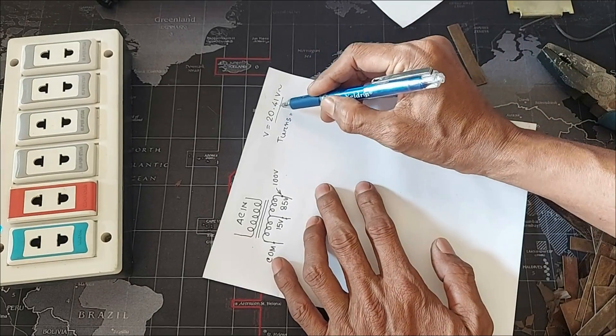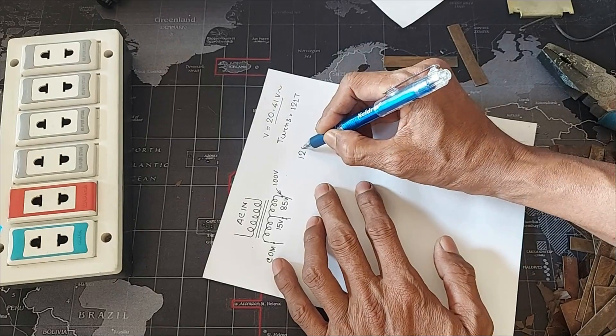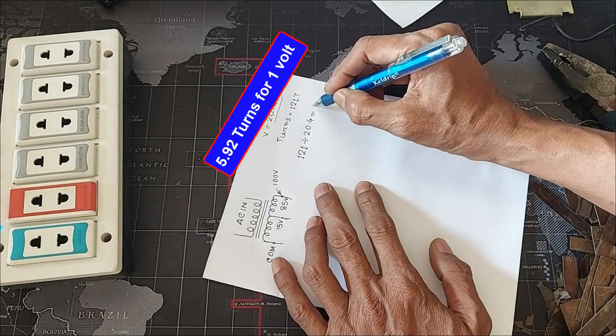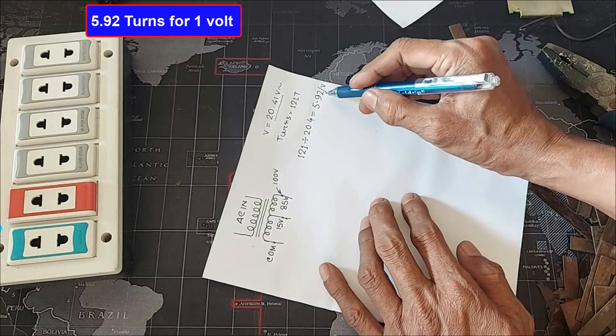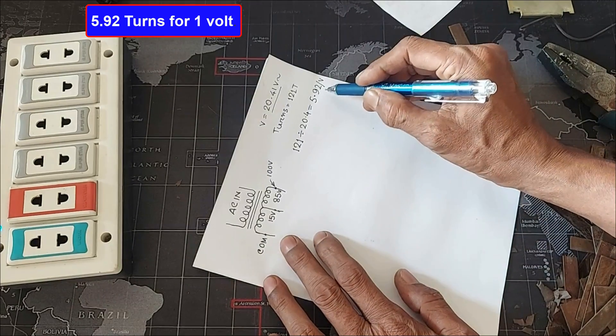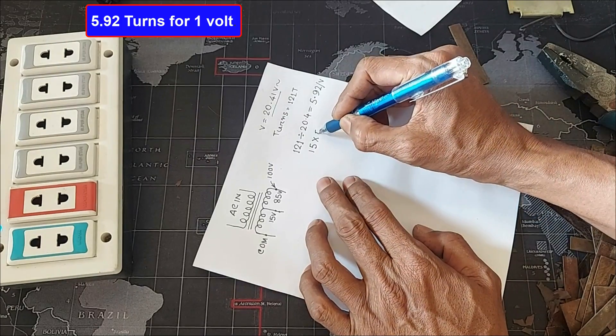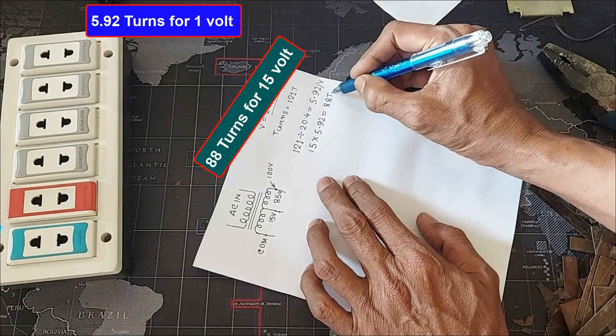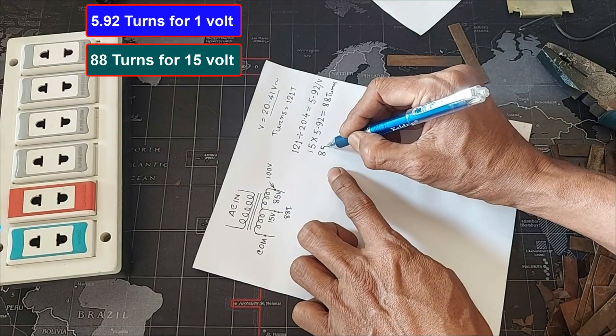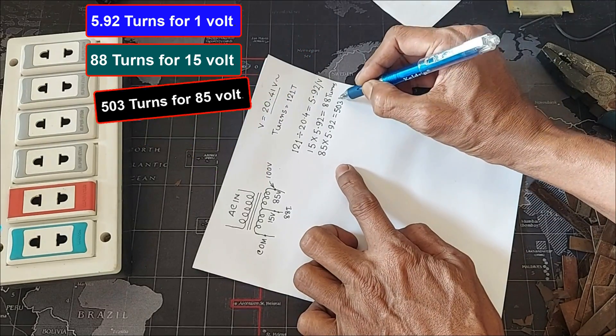For 20.41 volts, turns was 121. So divide 121 by 20.4 equals 5.92 turns per volt. So for 15 volts, 15 into 5.92 equals 88 turns. For 85 volts, 85 into 5.92 turns equals 503 turns.